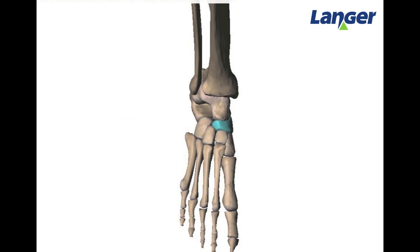The final bone within the tarsal region sits in between the proximal and distal row and it is called the navicular. The navicular articulates with the medial, intermediate, and lateral cuneiforms.